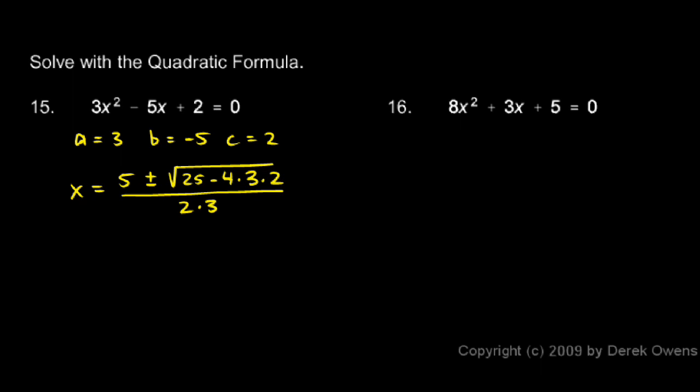Now we just need to work that out. We'll simplify this expression and end up with our answer. So first, let's simplify what's under the radical there. 25 minus 4 times 3 times 2. Well, 4 times 3 is 12, and 12 times 2 is 24. So 25 minus 24 is 1. So we have 5 plus or minus the square root of 1 over 6.